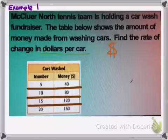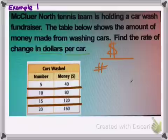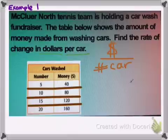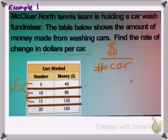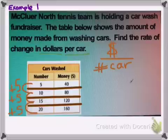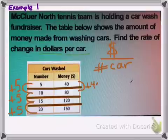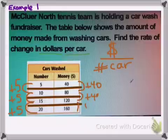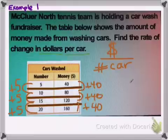And what we want to do is find the rate of change in dollars per car. So we want dollars per is divide number of cars. So let's take a look at our table. How do you go from 5 to 10 cars? You would add 5. How do you go from 10 to 15? Add 5. 15 to 20? Add 5. We see a linear relationship. It's the same thing you're adding each time. Now over here, how do you go from 40 to 80? We add 40. 80 to 120? Again, we add 40. 120 to 160? We add 40.